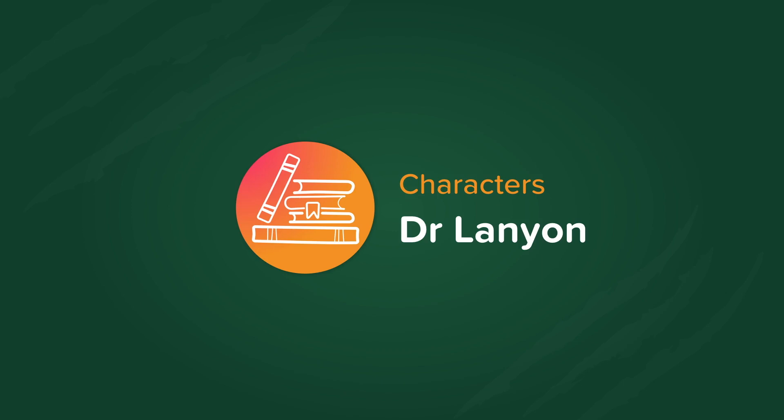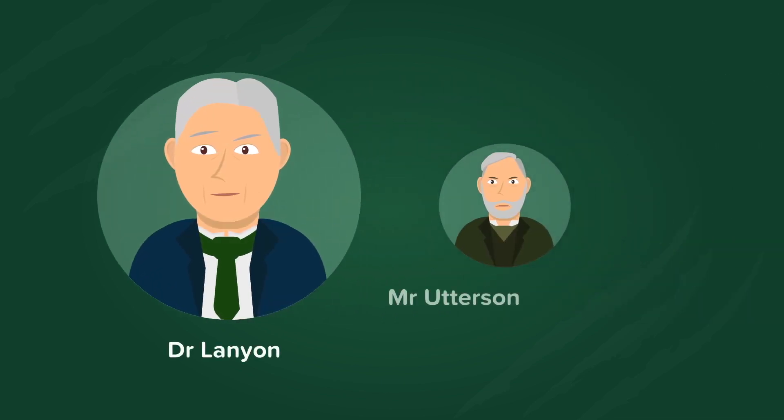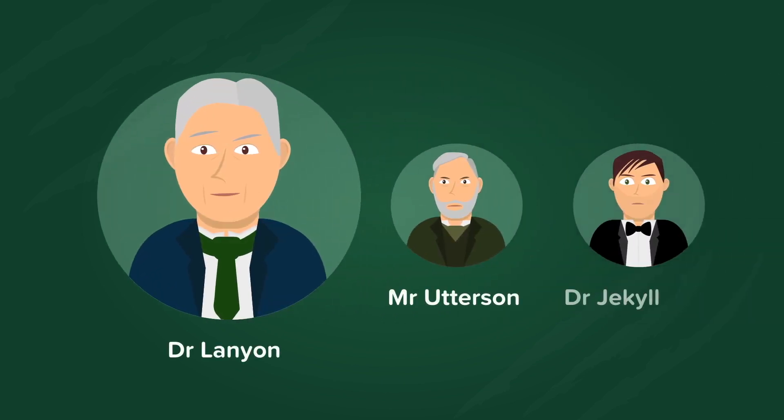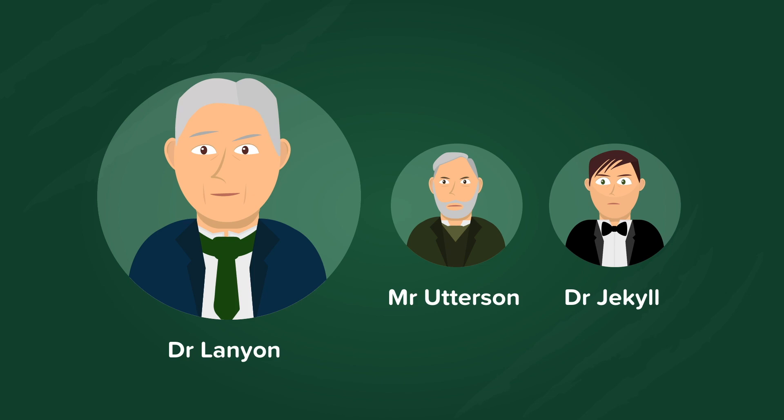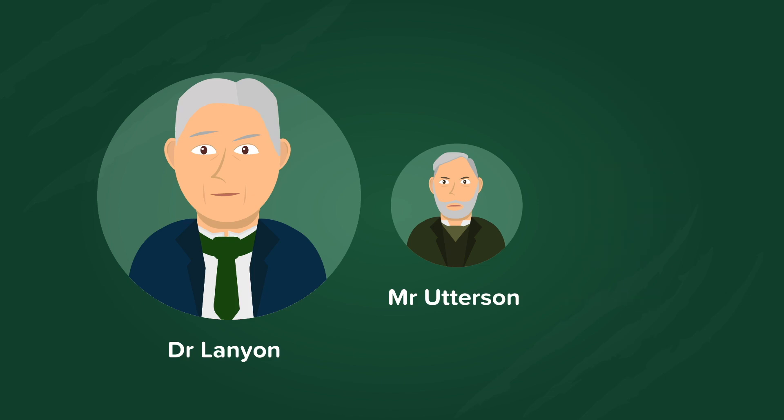In this nugget, we are going to explore the character Dr Lanyon. Dr Lanyon is a long-standing friend of Mr Utterson and Dr Jekyll's. However, Dr Lanyon and Dr Jekyll have fallen out because of their differing scientific beliefs.